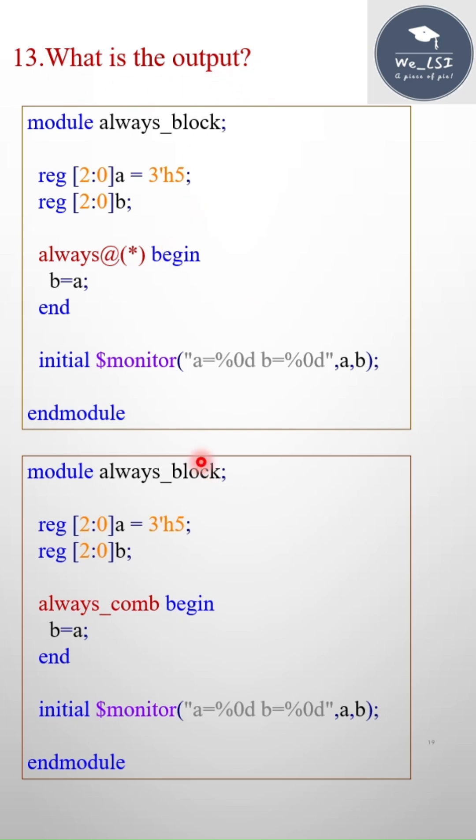What is the output here? I have two examples. Both examples are the same, but the difference is here I have used always at the rate star, and here I have used always comb block. In both blocks, I have the same statement: b is equals to a.